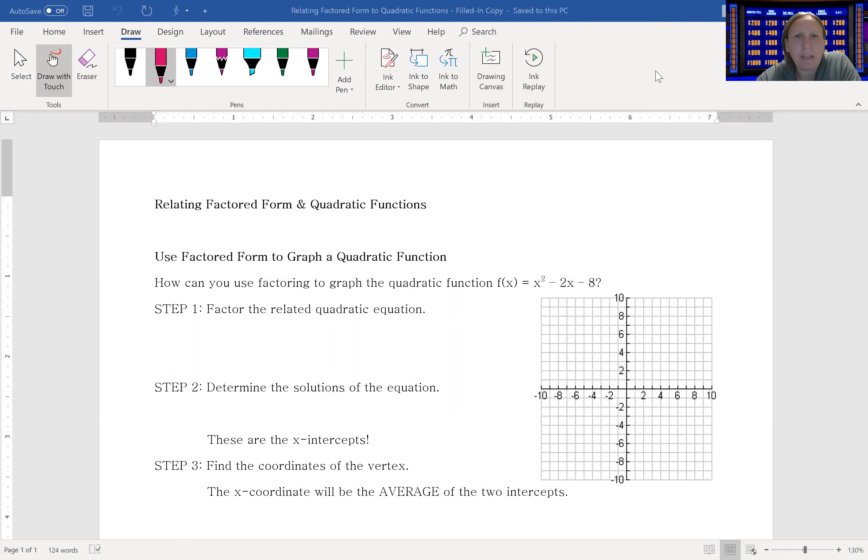Step one says factor the related quadratic equation. The related equation is when you take that and set it equal to zero, so 0 = x² - 2x - 8, and now we can factor it.